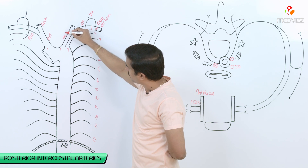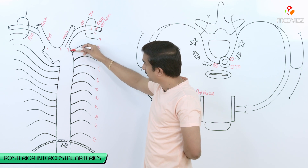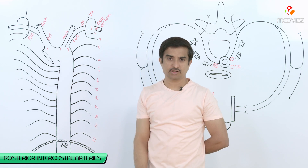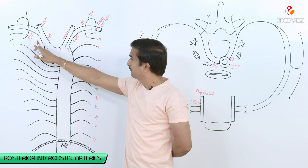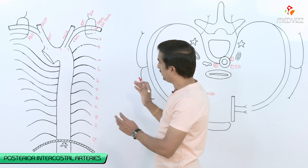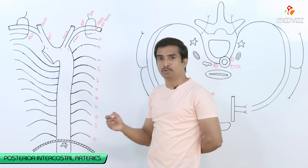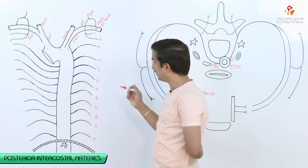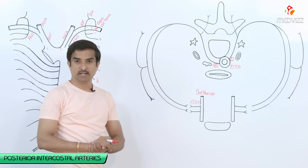The left common carotid artery arises from the arch of aorta as the second branch, and the third branch of the arch of aorta is the left subclavian artery. So we have the left subclavian artery and right subclavian artery, with the right common carotid artery arising from the brachiocephalic trunk and left common carotid artery arising directly from the arch of aorta. From the third to the eleventh, posterior intercostal arteries arise from the descending thoracic aorta.